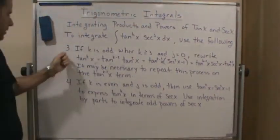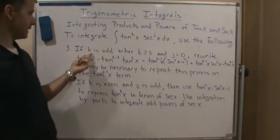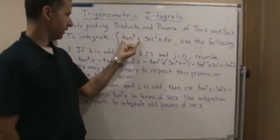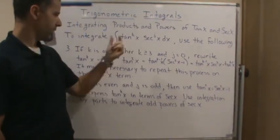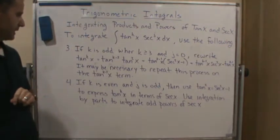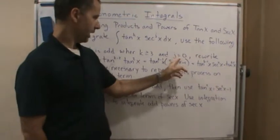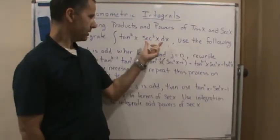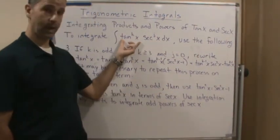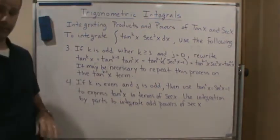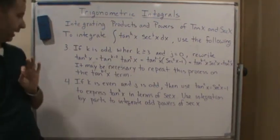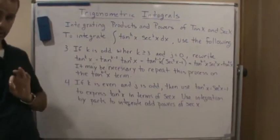So strategy three is if k is odd, so if the power of the tangent function is odd, where k is at least three, and j is zero, so there's no secant function here. So it's just a power of tangent where the power is an odd power of at least three.